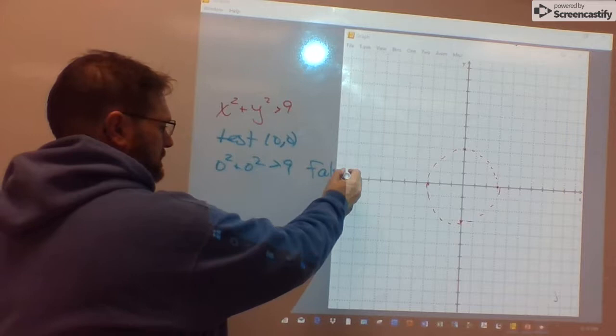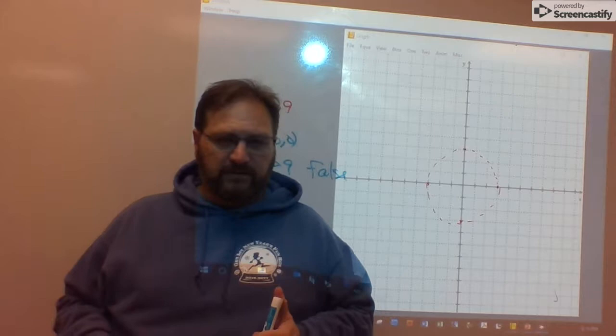Remember, when the statement is true, you shade toward the test point. When it's false, you shade away from it.